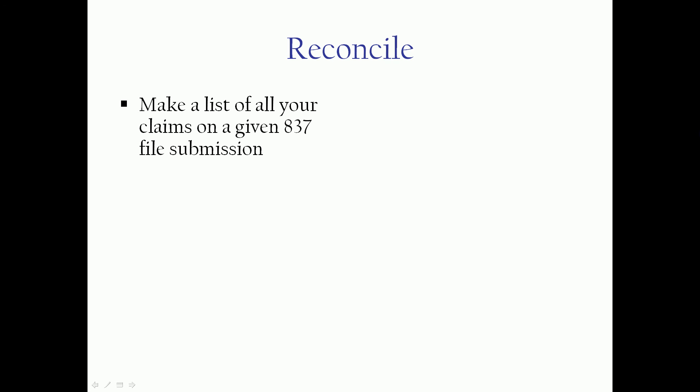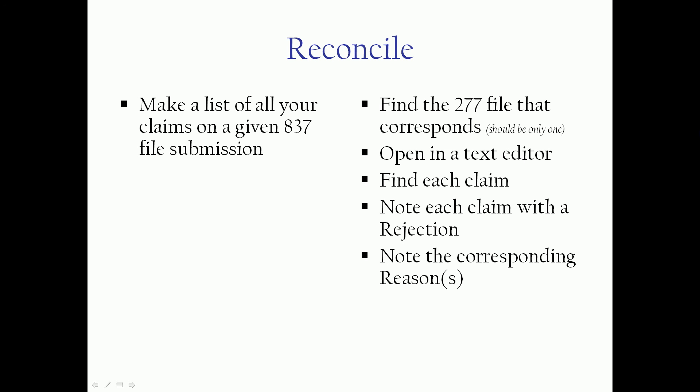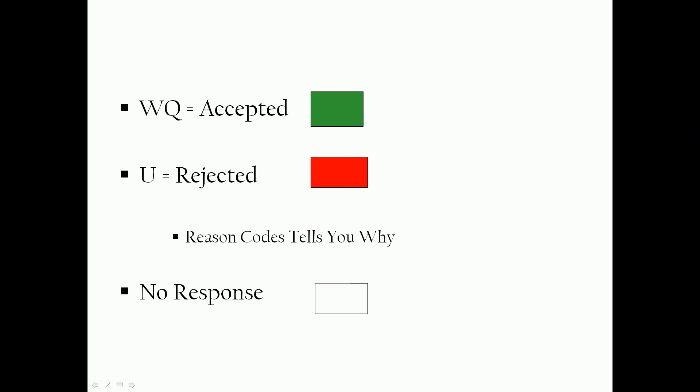To reconcile, you have to go through all of those codes. First, you want to make sure you're not just seeing your rejects but also identifying claims that are missing altogether — and believe it or not, this still happens quite a bit. Make a list of all your claims on a given 837 file that has been sent out — on paper, a napkin, or ideally a spreadsheet. Do a side-by-side comparison claim by claim: find the corresponding 277 file, open it in your text editor, find each claim, and note each rejection along with its reasons, but also flag any claims that are missing. Check them off as you address them, working the claims down the list. When you're all done, you should have something like a red light/green light approach where all the red ones need to be reworked.